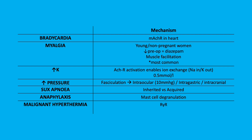There are 7 key side effects associated with suxamethonium. The most common is myalgia due to muscular fasciculations. Bradycardia is due to the molecule binding to muscarinic acetylcholine receptors in the heart. Hyperkalaemia by 0.5 mmol — receptor activation results in exchange of sodium and potassium, causing elevated levels of potassium. There is also an increase in pressure in the eye, stomach, and head, which is important for patients with injuries such as raised ICP or ocular injuries.